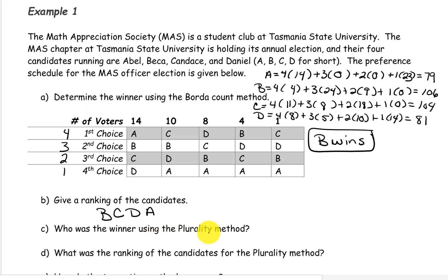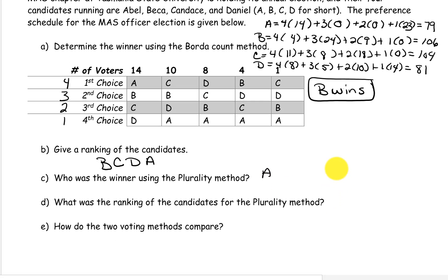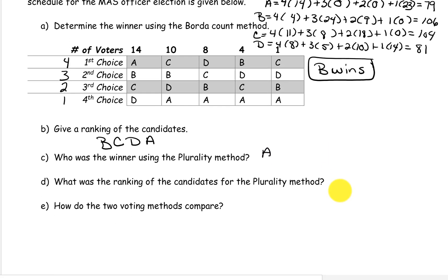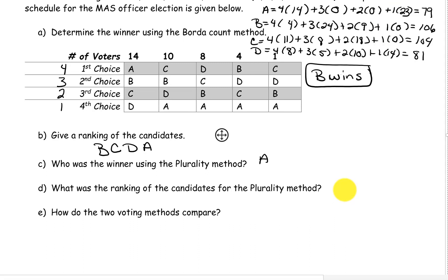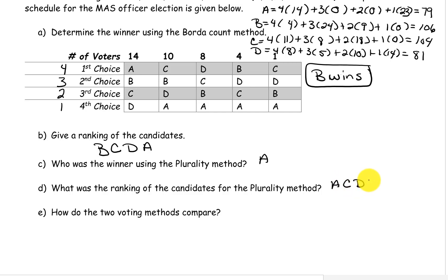Who was the plurality winner when we did this in a previous video? The plurality winner is the candidate that has the most first place votes, and in this case that would be candidate A. And the ranking of the candidates using the plurality method was candidate A, candidate C, candidate D, and candidate B.